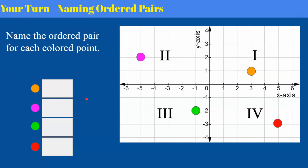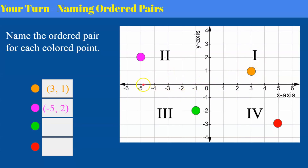Your turn. Name each of these colored ordered pairs — look at the point and give me the location in the box for each one. Welcome back, let's check. The orange is in quadrant one: going right three and up one, so positive three, positive one. The pink: going left negative five and up positive two. The green: going left negative one and down negative two. The red: going right positive five and down negative three.